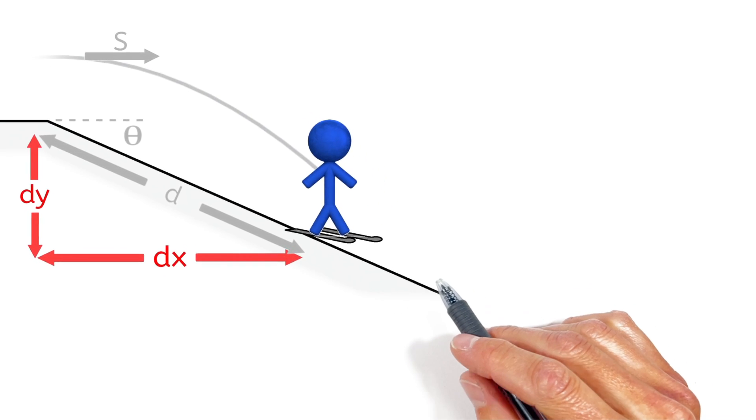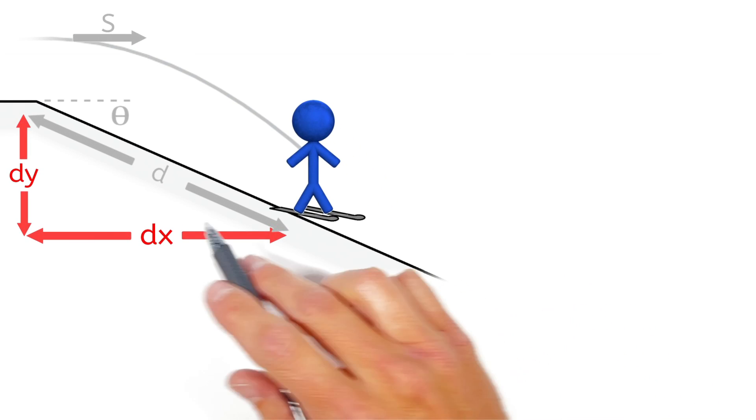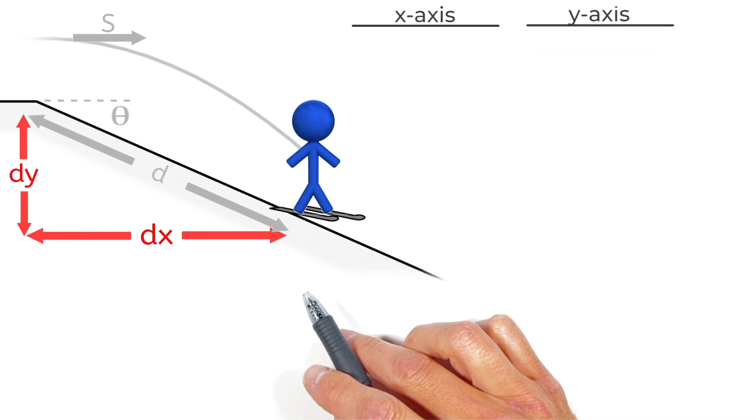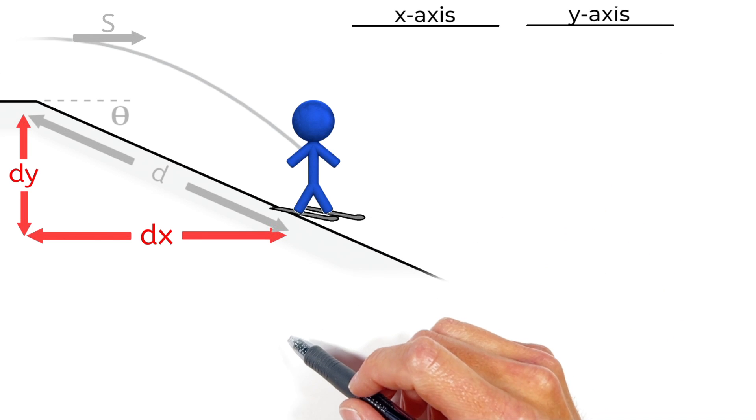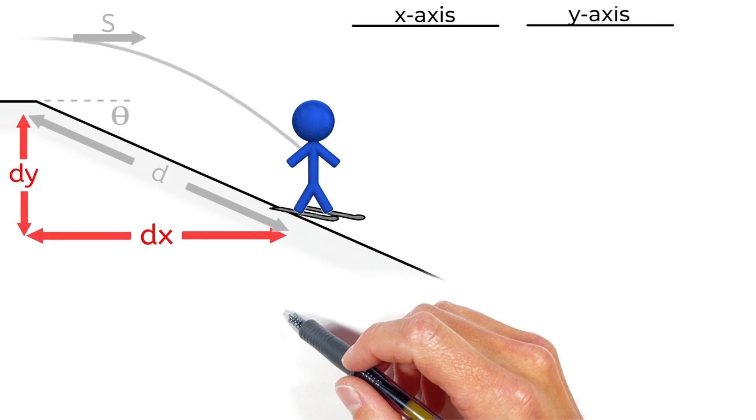So to solve this problem, what we're going to do is look at both the motion of the skier in the x and y-axis simultaneously and we're going to relate them back to the angle of the hill.